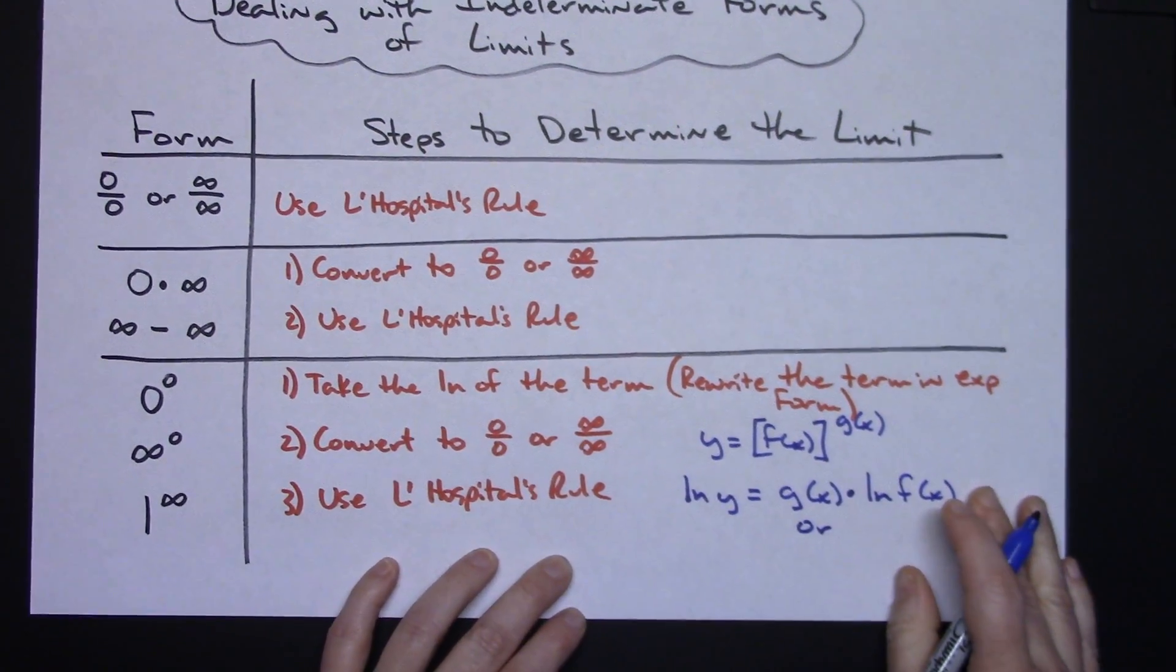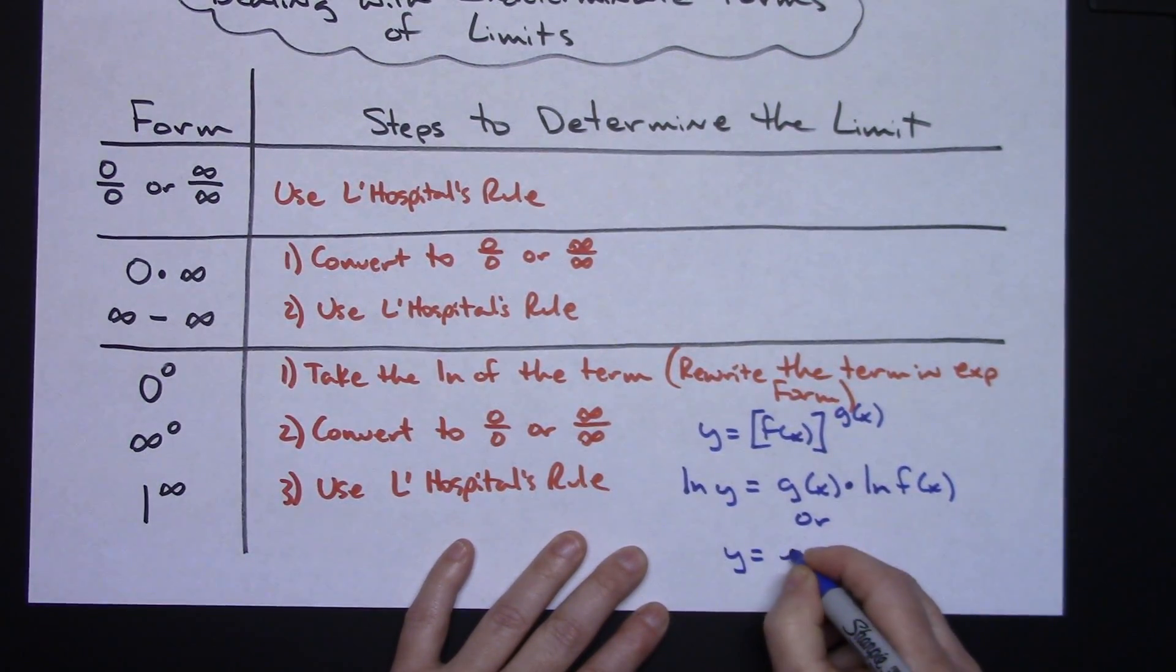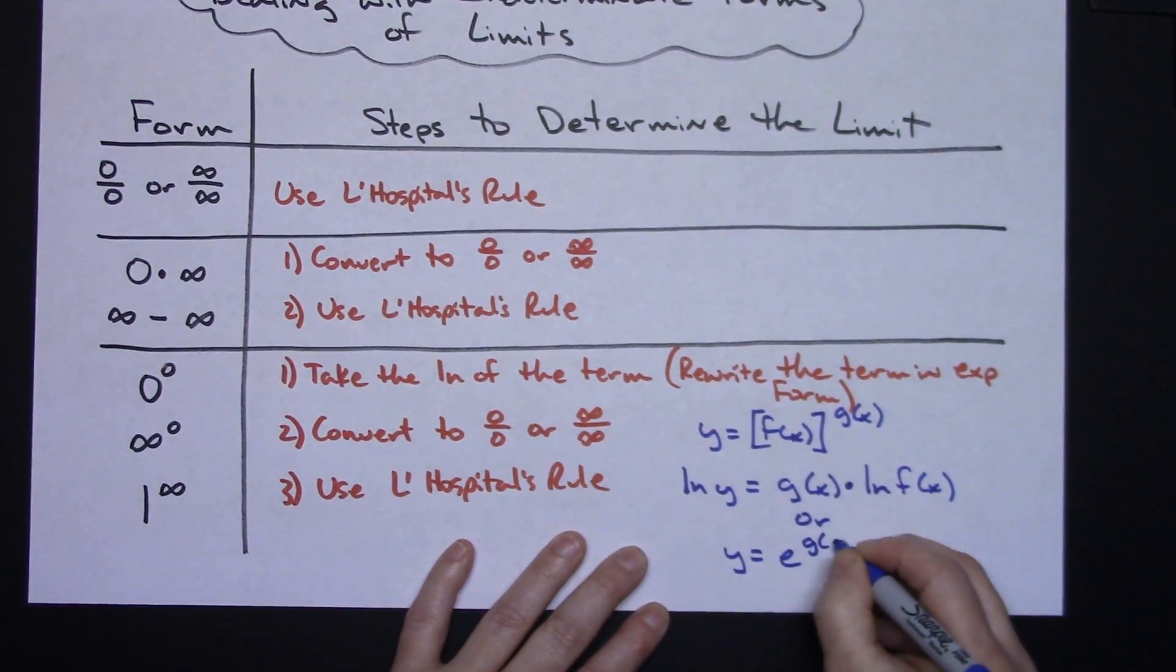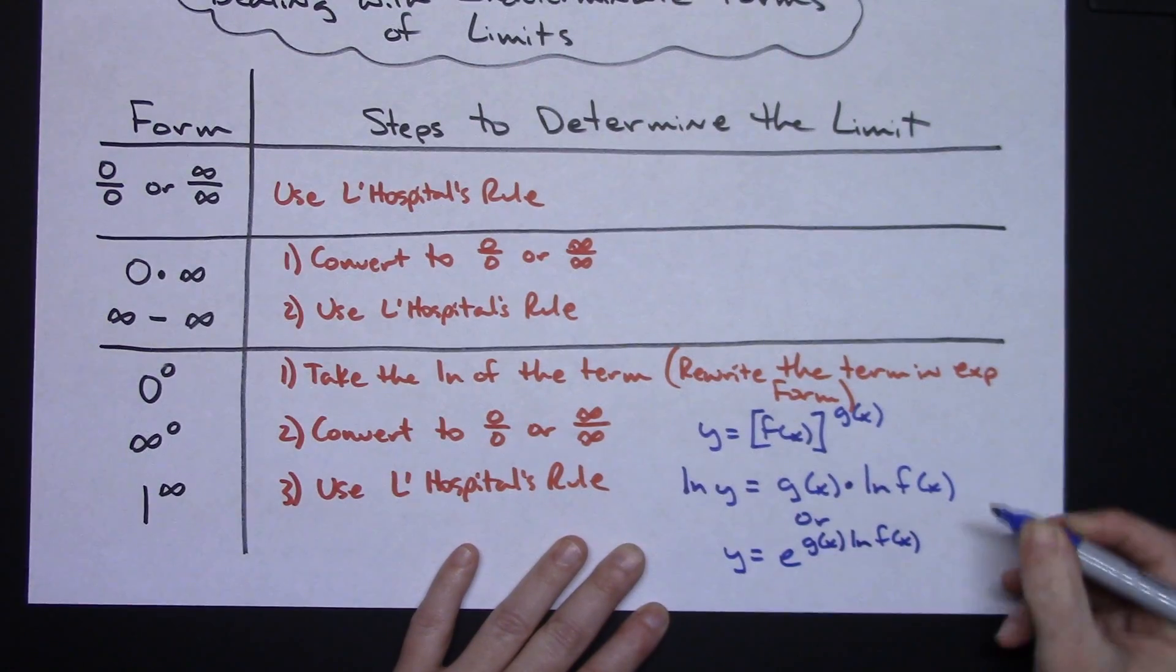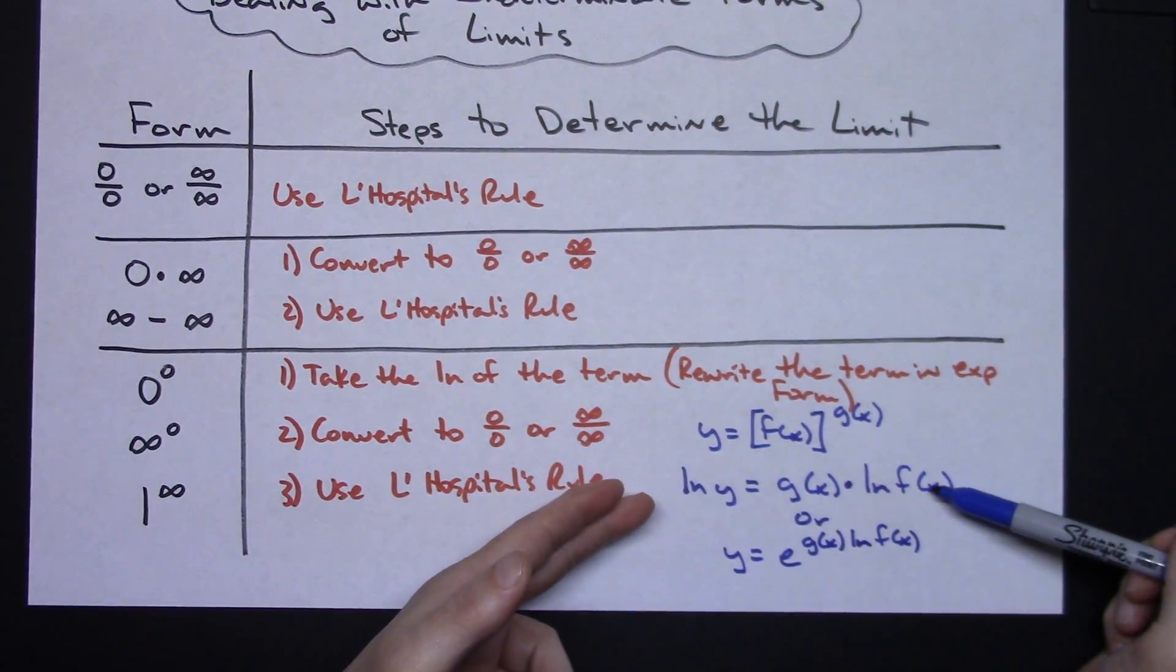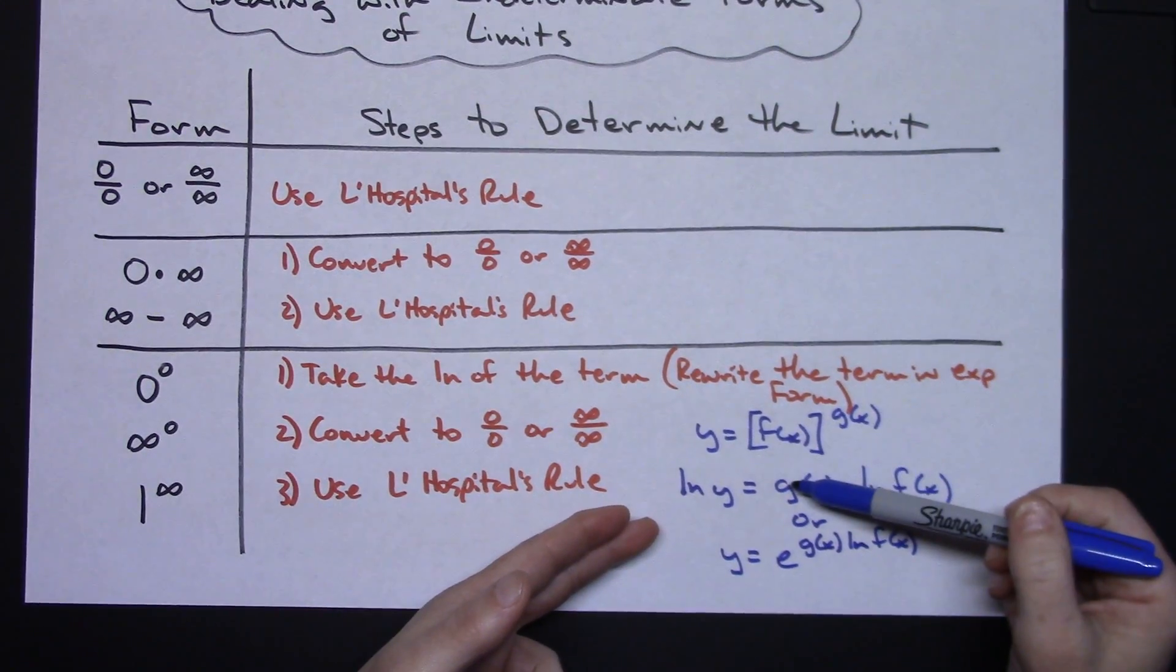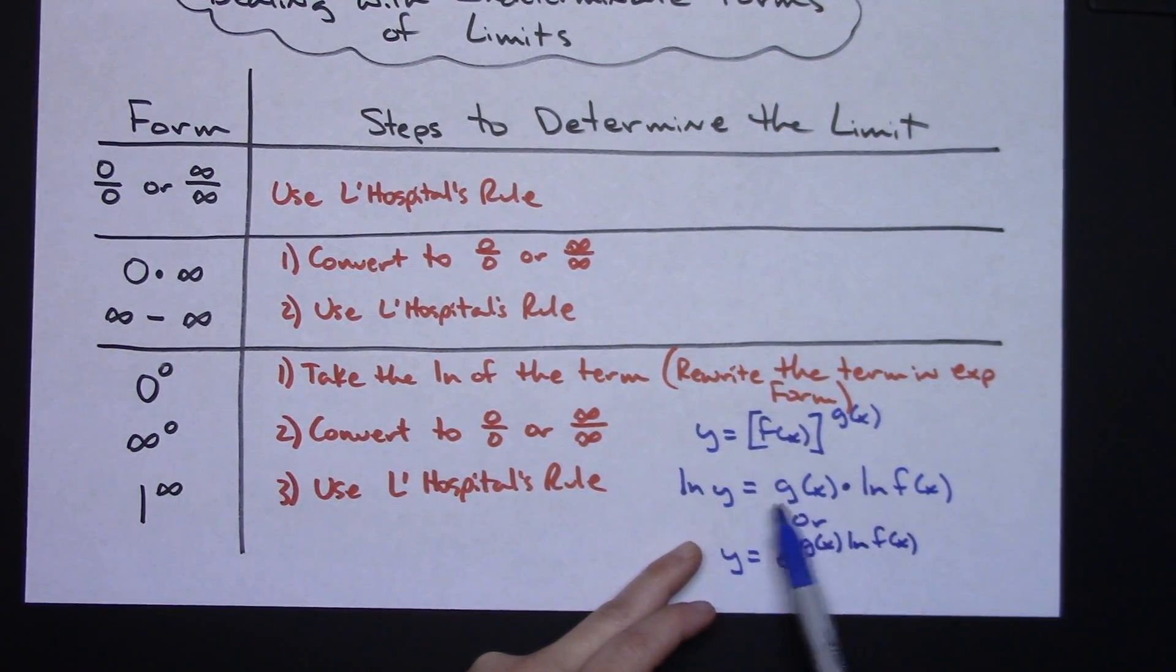Or I could also do it in exponential form, so I could have y equals e raised to the g of x times natural log of f of x. That's just doing some algebra and manipulation by taking the log of both sides and bringing that g of x function down in front, and then going into exponential form to get rid of those logs.